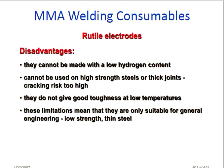Rutile electrode disadvantages: it cannot be made with low hydrogen content, so it is not suitable when low hydrogen is required. It cannot be used on high-strength steel or thick joints due to high cracking risk. It does not maintain good toughness at low temperatures. These limitations mean rutile electrodes are only suitable for general engineering, low-strength, and thin steel applications.